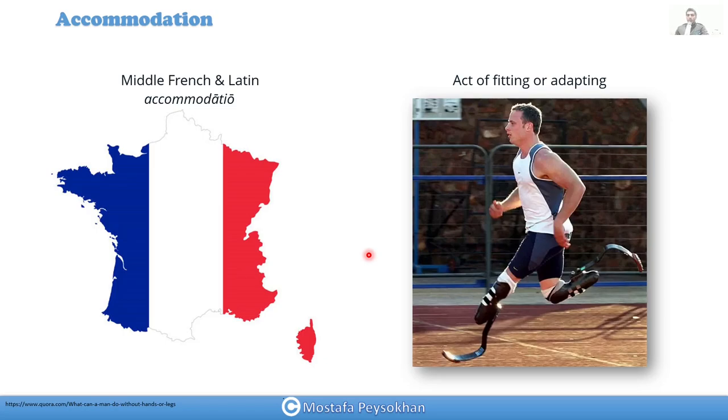So first we need to talk about what does it mean, accommodation. Accommodation is a Middle French and Latin word that means act of fitting or adapting to the situation. So when we say our eye is accommodated, it means that it's adapted to the situation.